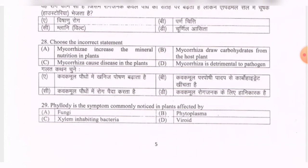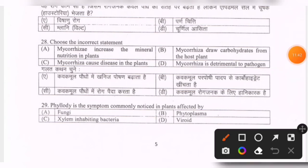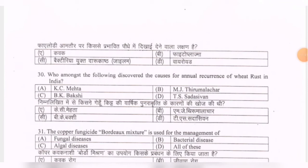Next question: phyllody is the symptom commonly noticed in plants affected by — options are fungi, phytoplasma, xylem-inhabiting bacteria, viroid. The correct option is B — phytoplasma.